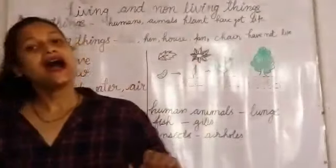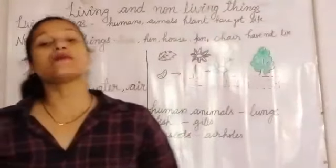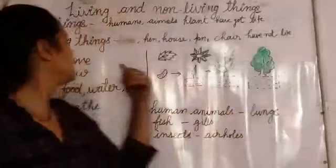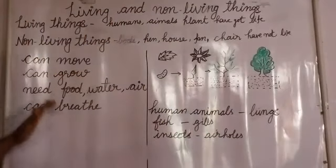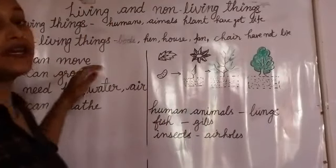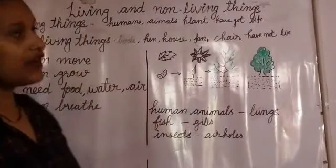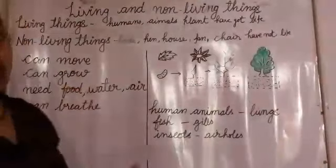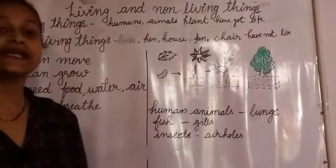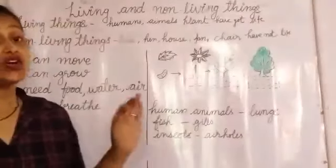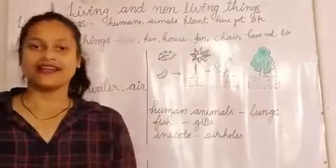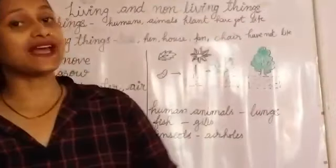Now I will tell you some characteristics of living things. Living things can move. Living things can grow. Living things need food, water and air. Living things can breathe.